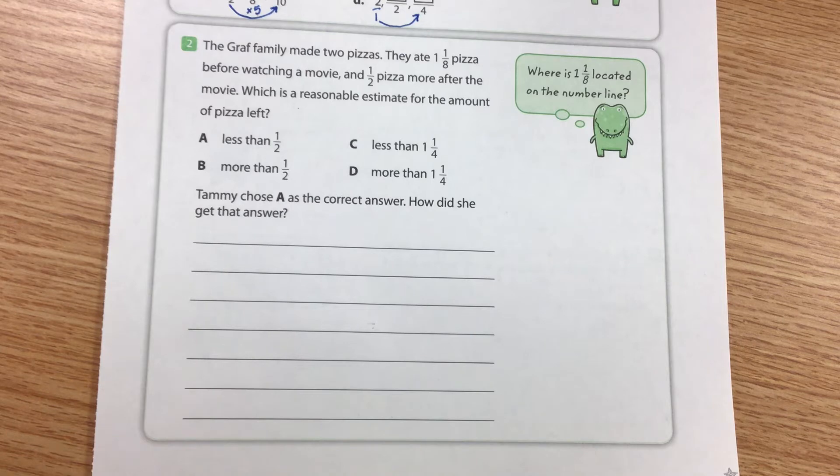Okay, so before the pizza they ate just a little bit more than one pizza, one and one-eighth pizza, and then after the pizza they ate another half. So what's a reasonable estimate for the amount of pizza that they have left? Is it less than a half, more than half, less than one and one-fourth, more than one and one-fourth?